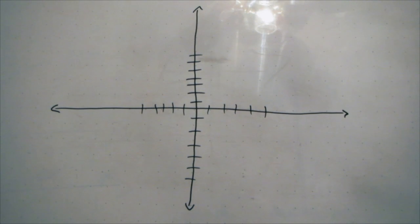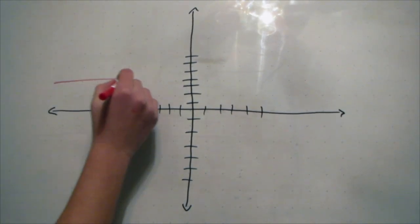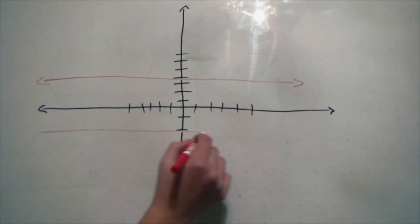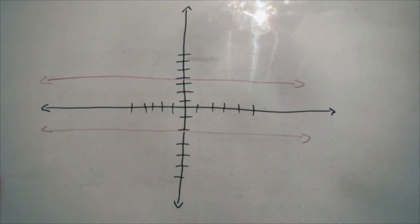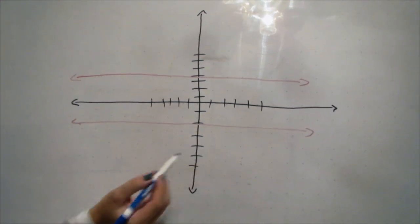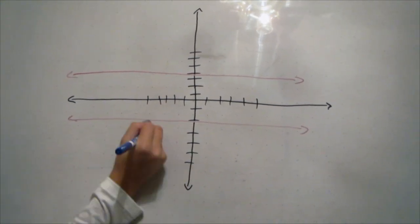An easy problem would be something like y equals 4 and y equals negative 2. Since there is no slope, all you have to do is count the distance between the two lines. The answer to this problem is 6 units.